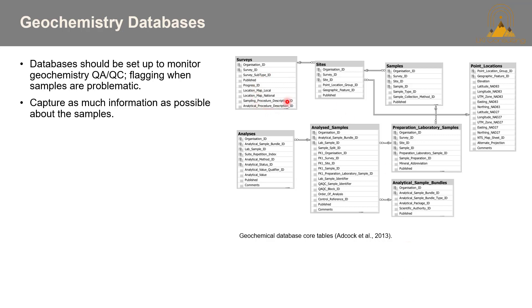For example, you want all the information about the survey: definitely where your location is, what region you are in — say WGS84 versus WGS83, even that is very different. Also what lab you used, because different labs, even if you're doing an aqua regia, it does differ from lab to lab. Having that information is going to be really important, especially down the line when people are interpreting the data.